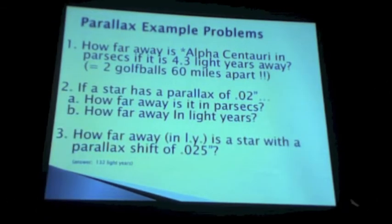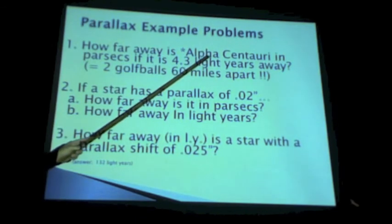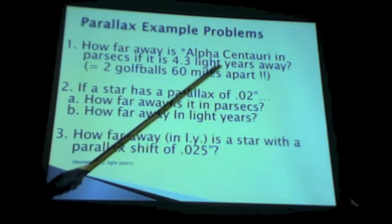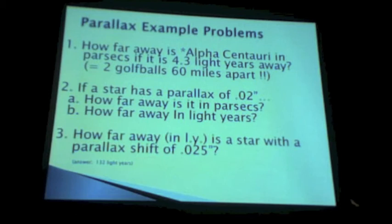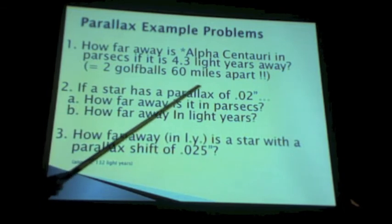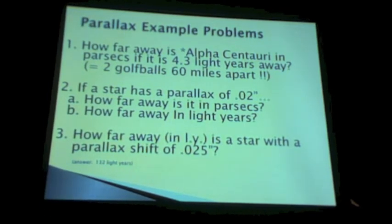How far away is it in parsecs? So recapping our calculational problems, we saw that the distance to Alpha Centauri is 4.3 light years. That converts to 1.3 parsecs. You divide by 3.3, you get 1.3 parsecs. That's the equivalent of two golf balls 60 miles apart. That's how big space is. That's our next-door neighbor. It's scary.